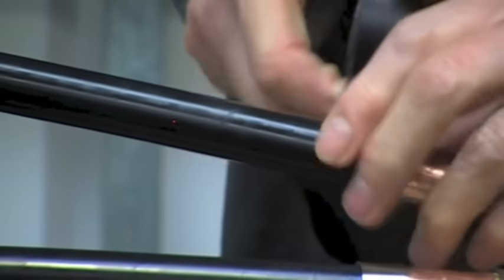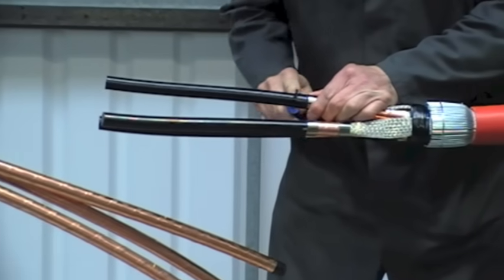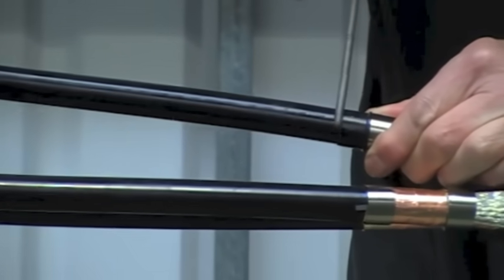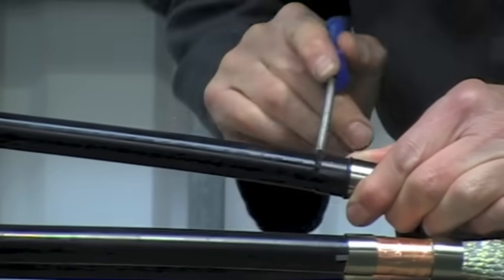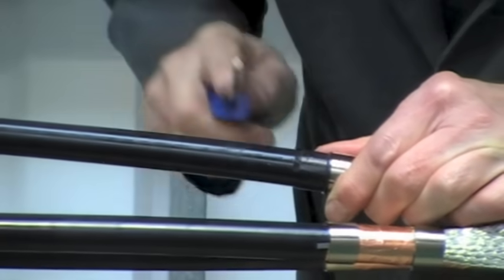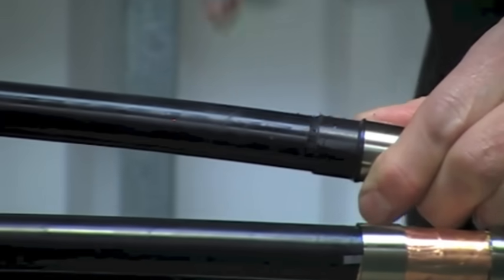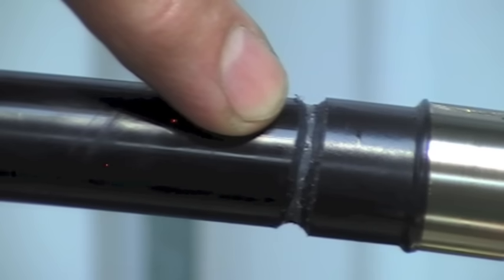The best method of removing the easy strip type semi-conductive screen is by using a round file or commonly known as a rat tail file. File around the core as shown until you see the white primary insulation beneath. Do not use a sharp knife or a Stanley knife to do this.